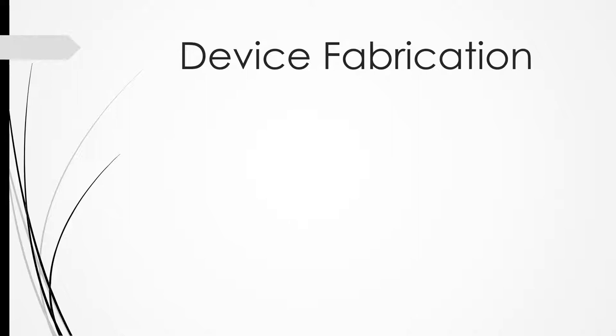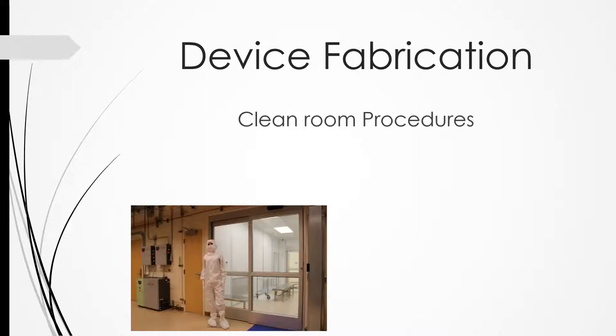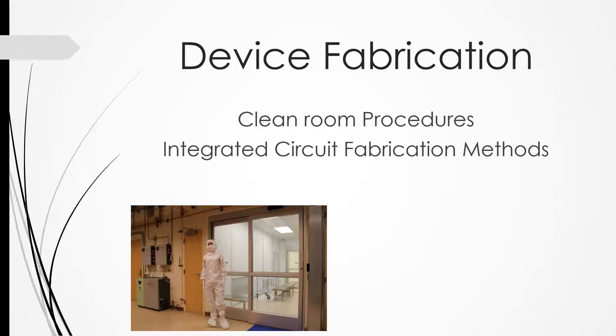Now that we understand what it is we are going to make, we need to have a procedure to fabricate the device. Since the structures that we are creating are on a nanoscale, fabrication in any place other than the clean room would prove to be quite difficult and can be contaminated easily. Our procedures will be conducted similarly to integrated circuit fabrication. This incorporates photolithography and metal deposition onto a wafer, allowing us to create the necessary Schottky structure for our device.